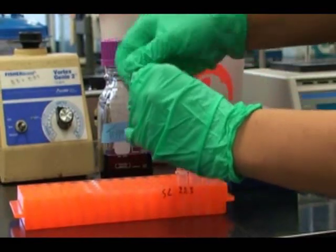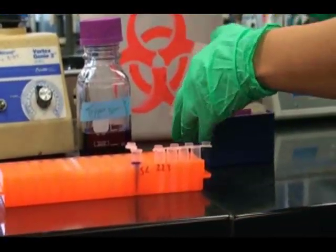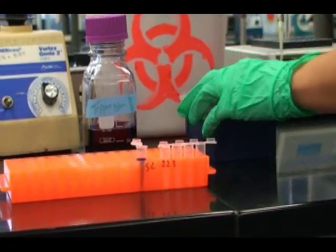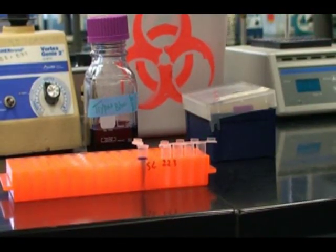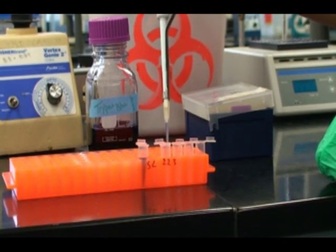Open the first tube with a 1 tenth or 10 to the negative 1st dilution. Then with a new pipette tip, pipette 100 microliters from the 10 to the negative 1st dilution into the second tube to make your 1 hundredth or 10 to the negative 2 dilution.